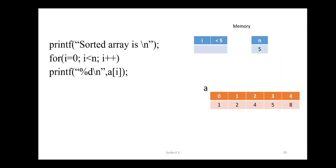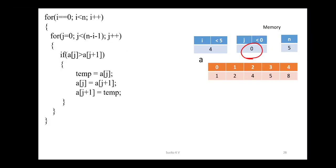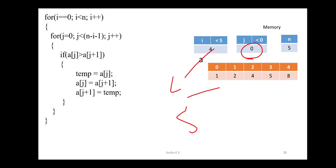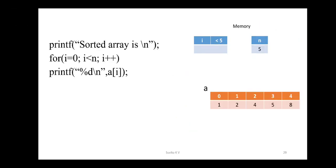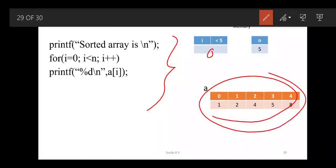When i becomes 5, is 5 less than 5? No — false. So at last it prints the sorted array. For i equal to 0 until i is less than 5, whatever elements have been sorted, you are going to get the output.